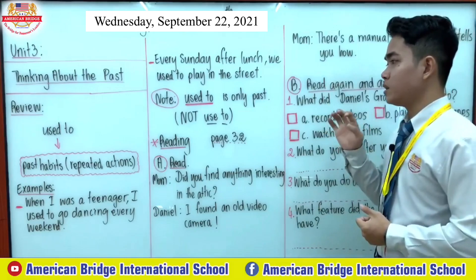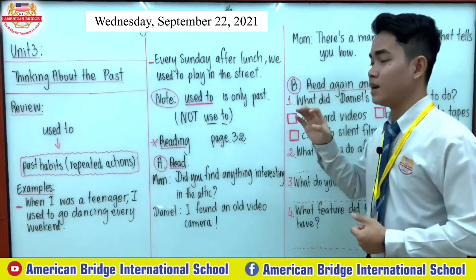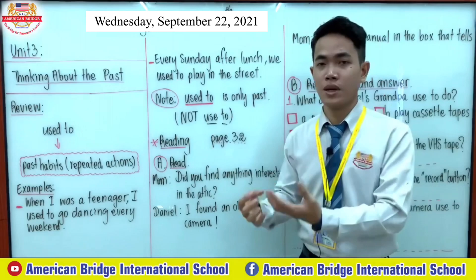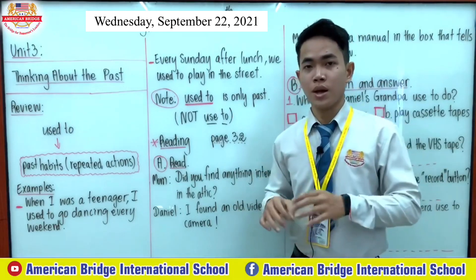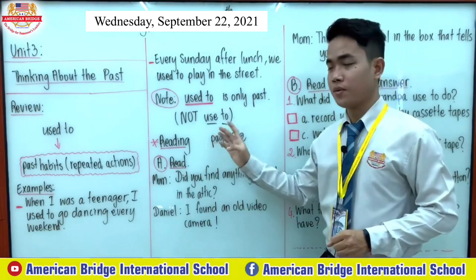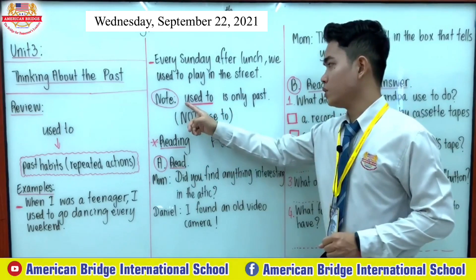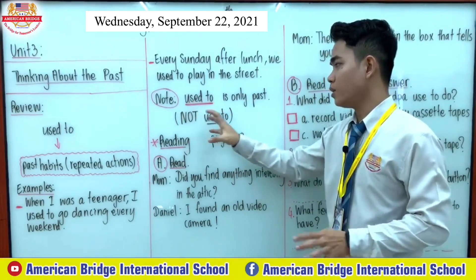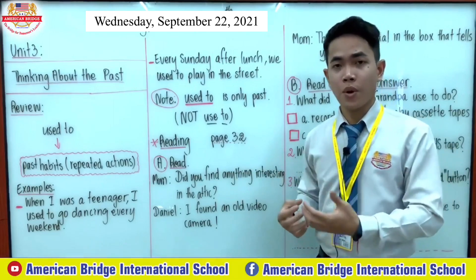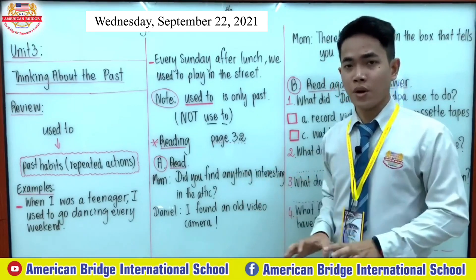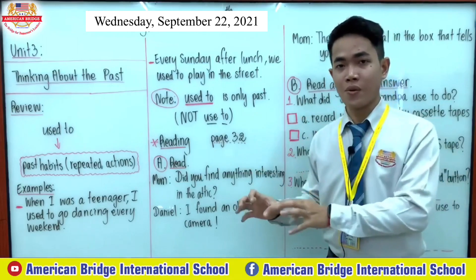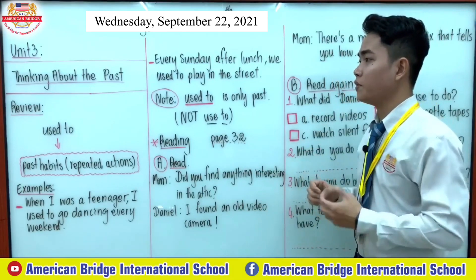Please remember that 'used to' is only used for the past. We spell it U-S-E-D T-O, representing past habits or repeated actions. We do not use it without the D. However, when making a negative form or question form, we don't need to add D because we already changed 'do' to 'did.' That's it for our review section.